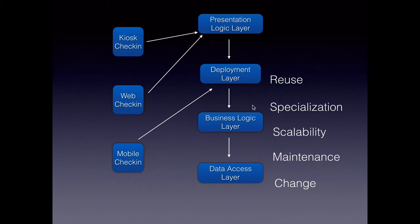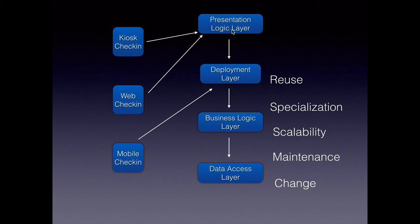Maintenance. Now that we have our applications layered out, if there is an issue with the application or a production issue, we can easily isolate it to a particular layer. For example, if there is something wrong with the business logic, we know we have to focus on the business logic layer. Similarly, if a button is not showing up on the UI or not working as it should, we can look at the presentation layer code.